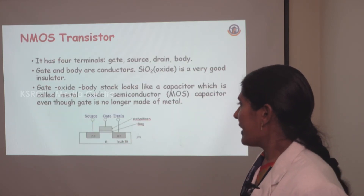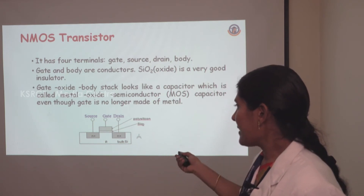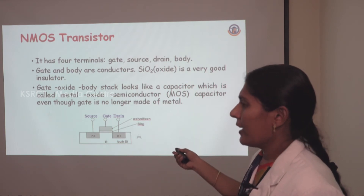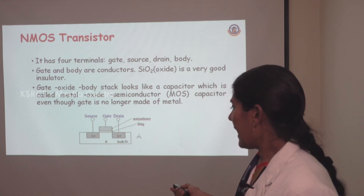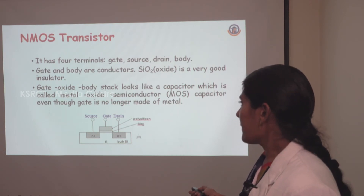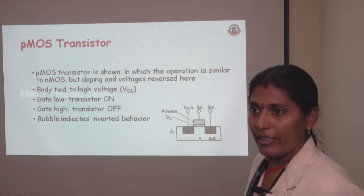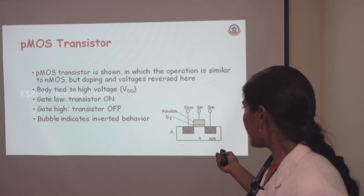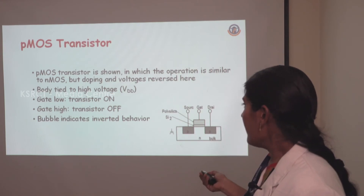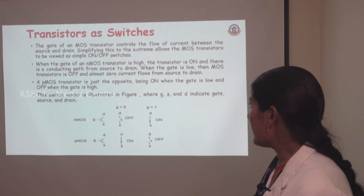This is the NMOS transistor cross-sectional view — N-P-N structure. In the P substrate, we dope N-type material to form the N-transistor. It has four terminals: source, gate, drain, and substrate. This is the cross-sectional view of the PMOS transistor. The PMOS transistor also has four terminals — source, gate, drain, and substrate — and it is the opposite of the NMOS transistor.